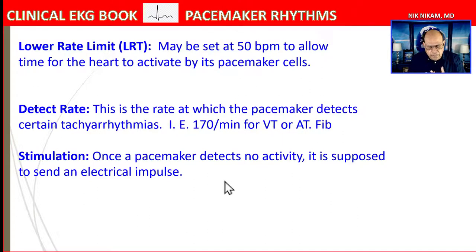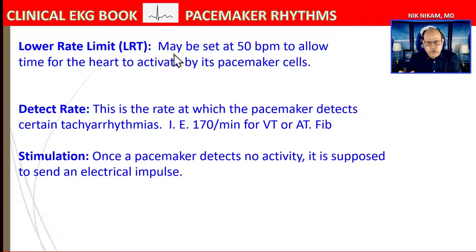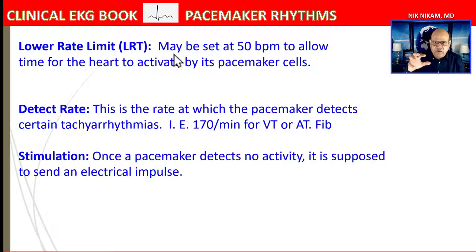The pacemaker battery pack is like a miniature computer — it detects heartbeats and missing heartbeats, stimulates the heart, tracks heart rate and rhythm, and can shock the heart. The lower rate limit is set at 50, sometimes 40 or 60 BPM; below this, the pacemaker takes over. This allows the heart's natural electrical system to function as much as possible, maintaining synchrony between the atria and ventricles.